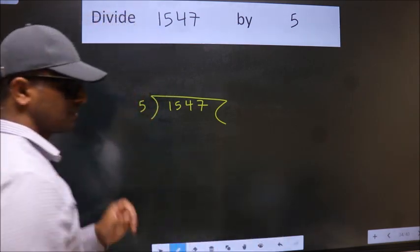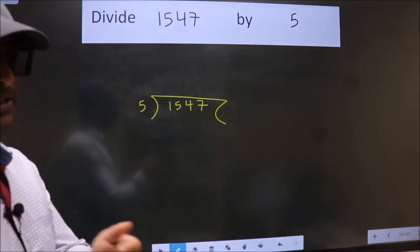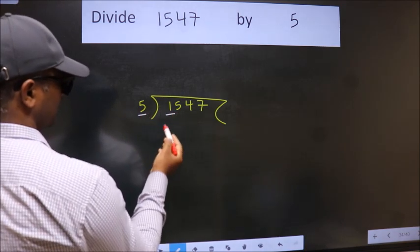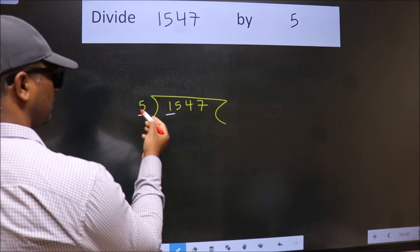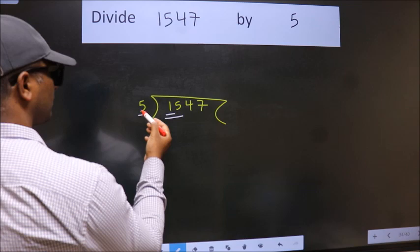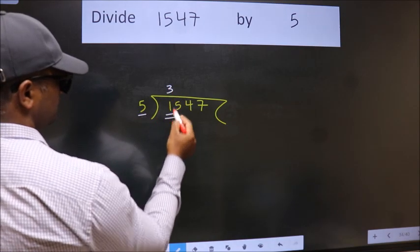This is your step 1. Next, here we have 1, here 5. 1 is smaller than 5, so we should take two numbers, 15. When do we get 15 in the 5 table? 5 times 3 is 15.